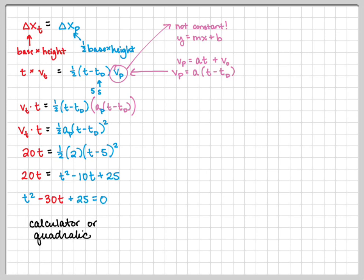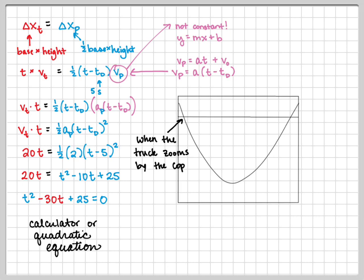By doing that, I can plug this back into the triangle formula, combining T minus TD together. Plugging in the numbers and using a calculator — I set it up as Y equals and find the zeros. The first zero is when the speeder passes the cop, not when the cop catches him. The second solution to the quadratic equation happens at time equals 29.14 seconds — that's when the cop catches up. We can then determine where they meet by multiplying 29.14 by the truck's speed of 20 meters per second.